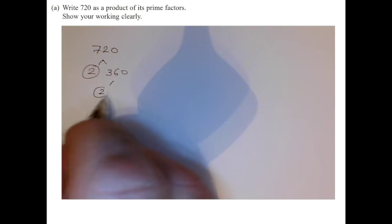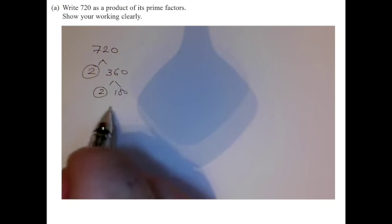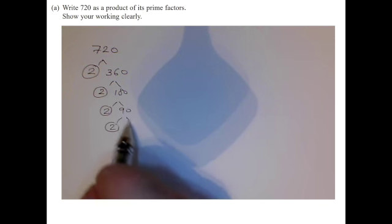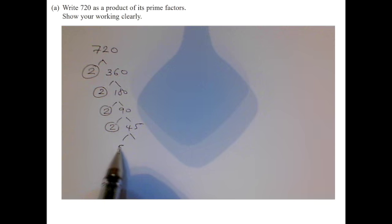You can see 2 times by 360, 2 times by 180, 2 times by 90, 2 times by 45. So 45 is, what, 5 nines, and of course 9 breaks up into 3 and 3.